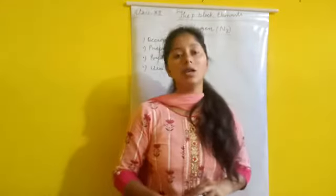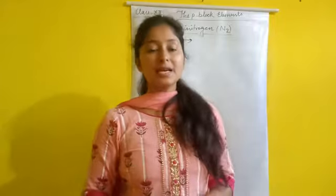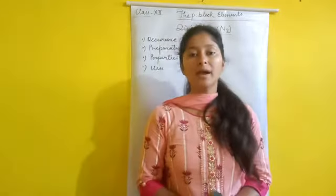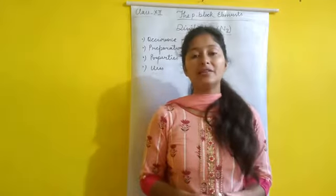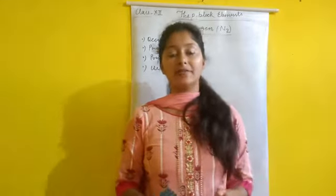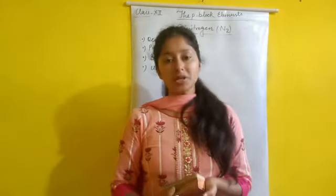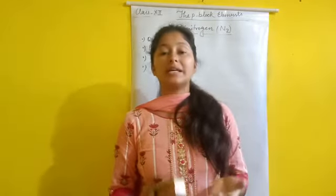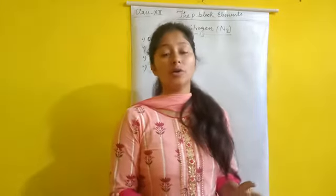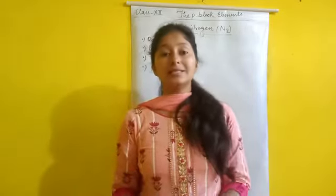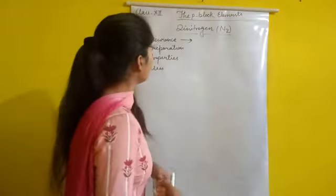Dinitrogen, or molecular nitrogen (N2), comprises 78% by volume of the atmosphere. In the Earth's crust it occurs as sodium nitrate — also known as Chile saltpeter — and potassium nitrate, also known as Indian saltpeter. It is also found in the form of proteins in plants and animals.